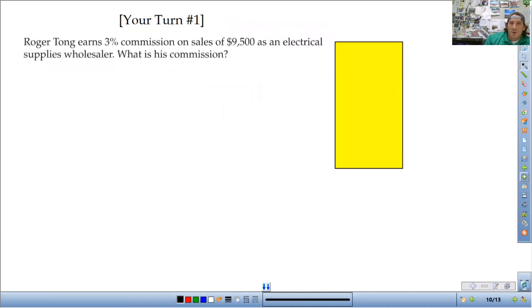Once you try this one on your own, pause the video. And then when you're done, check your answer. I'm going to go through it right now. So first thing I'm going to do is take that 3% divide it by 100 to get a decimal form to work with. So that's 0.03. Then I take my total sales, $9,500, and multiply it by the commission rate.